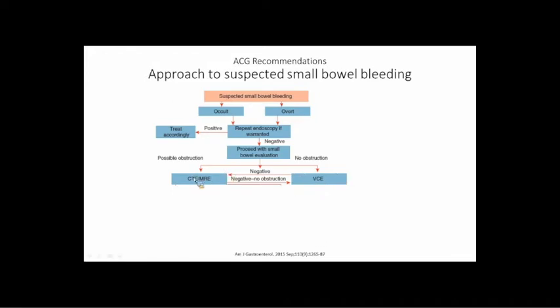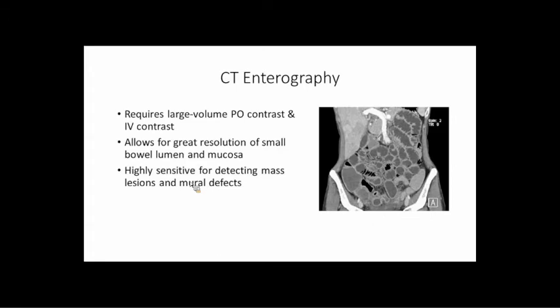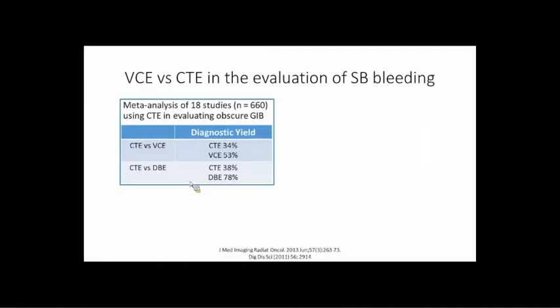If your capsule is normal, the next step is CT enterography. CT enterography is a little different from a standard CT abdomen and pelvis — they use a very large volume of oral contrast and IV contrast to really opacify the small bowel mucosa. It allows really great resolution, is very sensitive for small bowel mass lesions, and may also let you see blood in the small bowel. Comparing it to other modalities, capsule has a higher diagnostic yield and balloon enteroscopy also has a higher diagnostic yield than CT enterography.